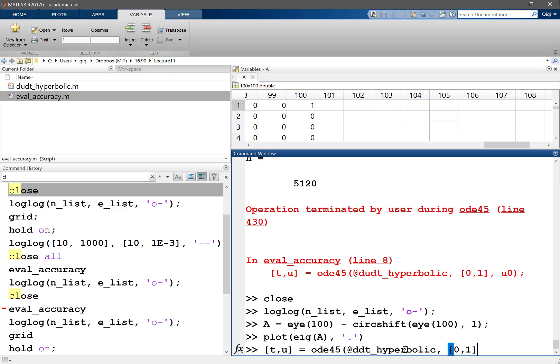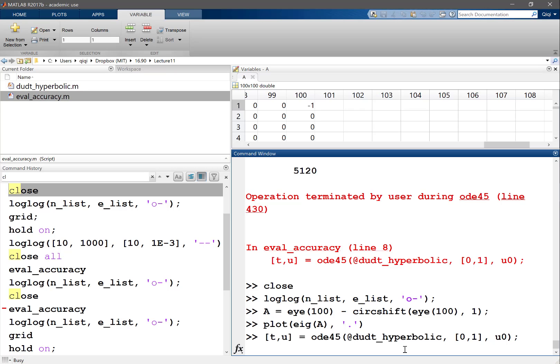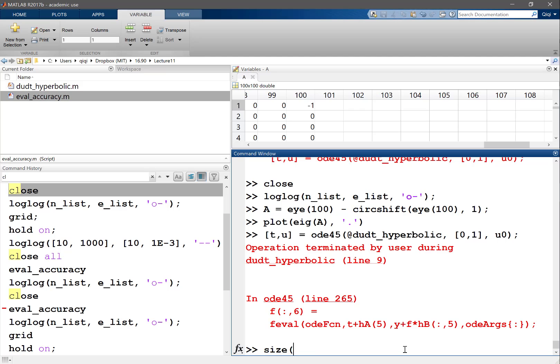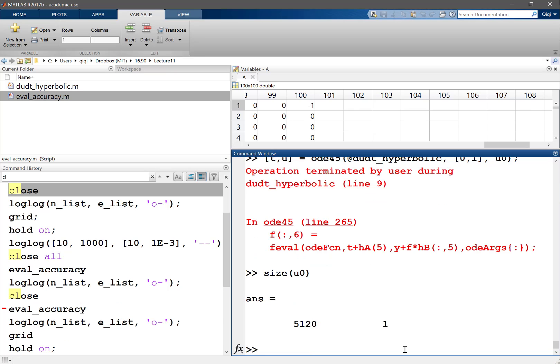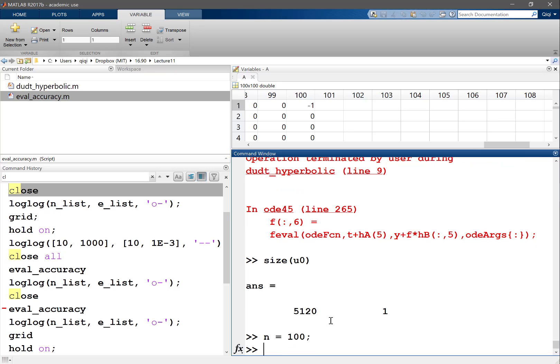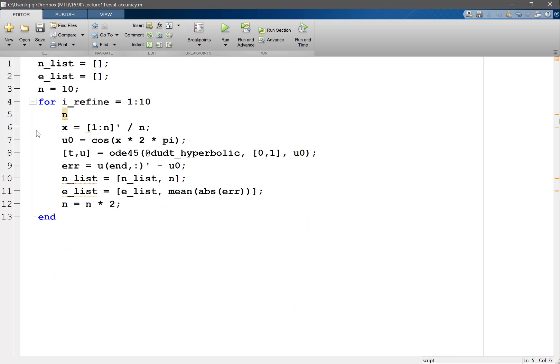Let's set n equal to 100. u0 is going to be—let's actually run some of these from here. Let's paste.